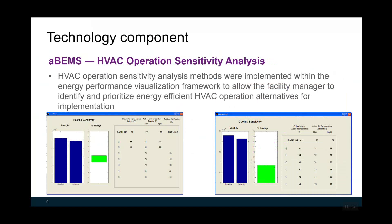For the HVAC operation sensitivity analysis, this analysis is implemented within the energy performance visualization framework to allow facility managers to identify and prioritize energy-efficient HVAC operation alternatives for implementation. The two figures on this slide show the operation sensitivity analysis for the supply air temperature setpoint and the chilled water supply temperature setpoint. Based on these sensitivity analyses, we gain better understanding of how supply air temperature and chilled water supply temperature setpoints impact energy consumption.